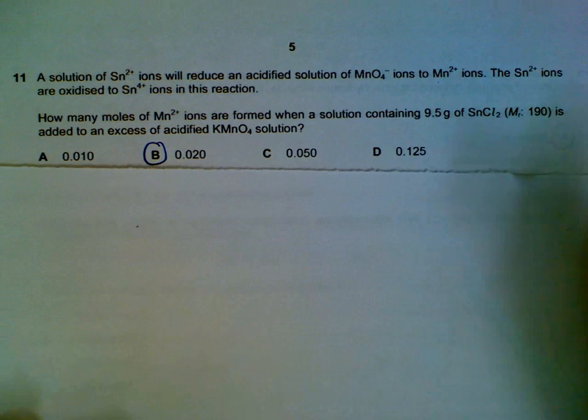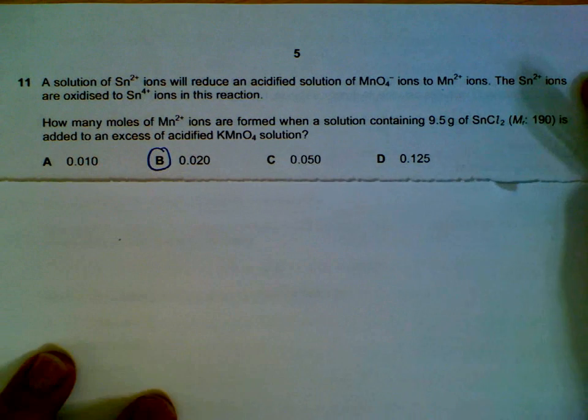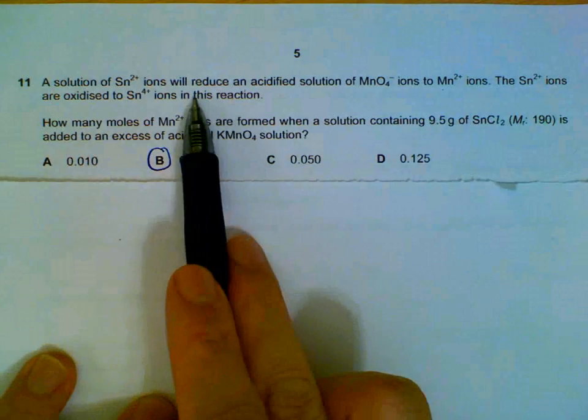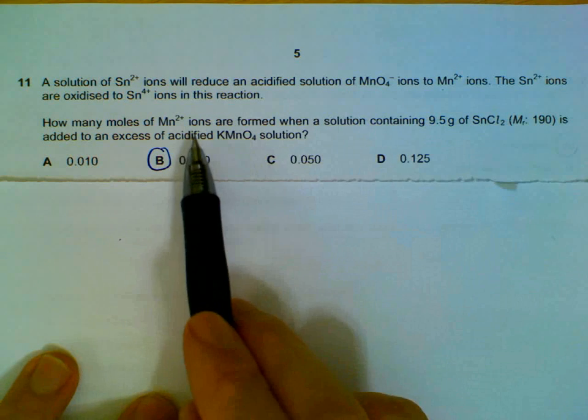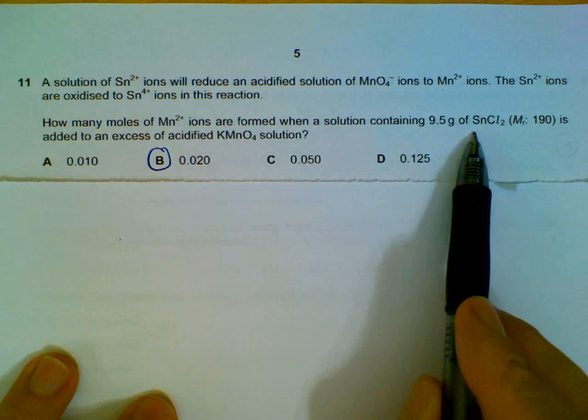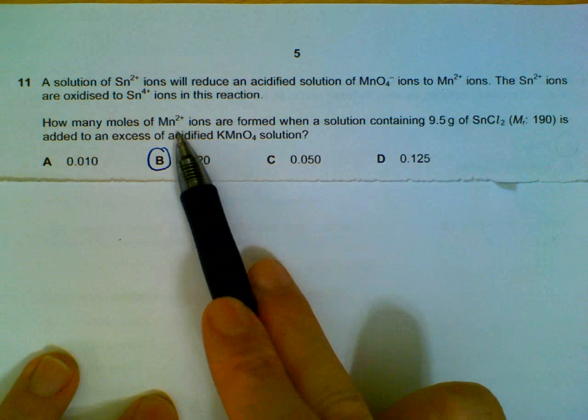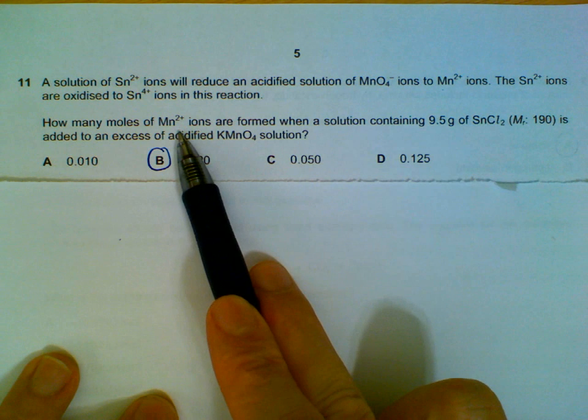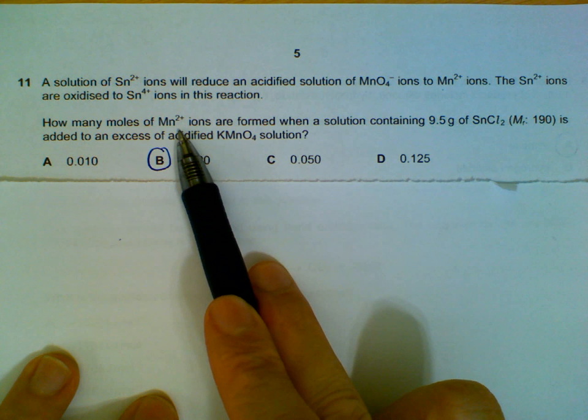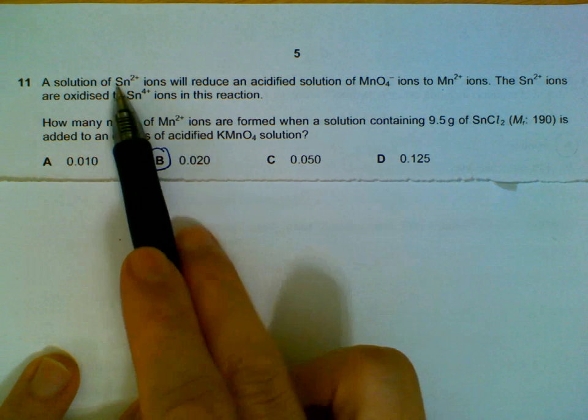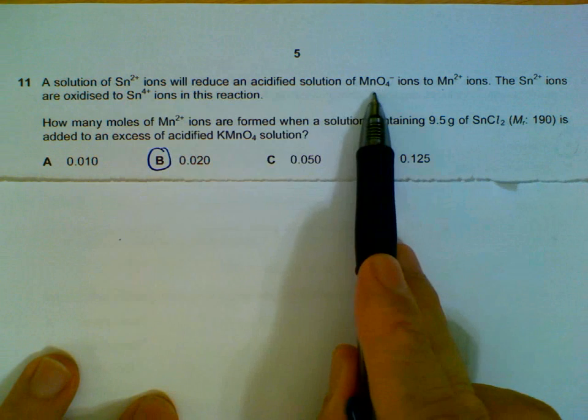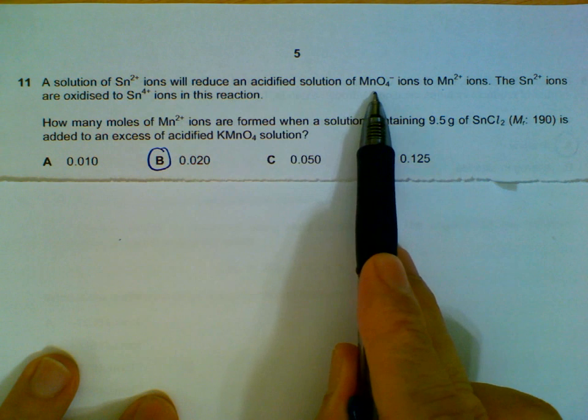Question 11, we have reaction between tin and permanganate, a redox reaction. They're interested to see that if we have 9.5 grams of tin chloride, how many Mn²⁺ ions will be formed. So essentially we have to find out the mole ratio in which the Sn²⁺ and the MnO₄⁻ will react with each other.